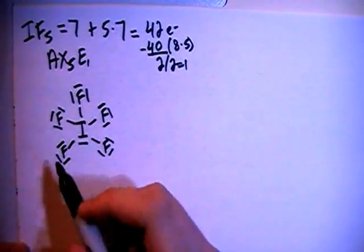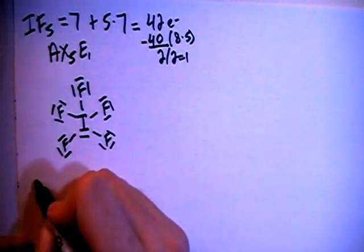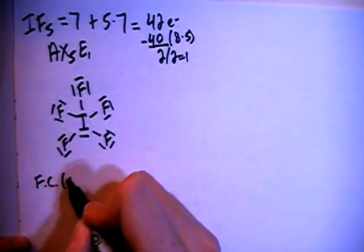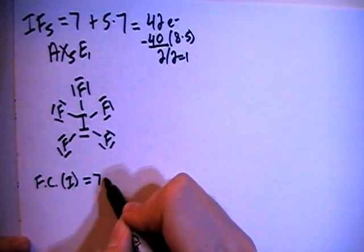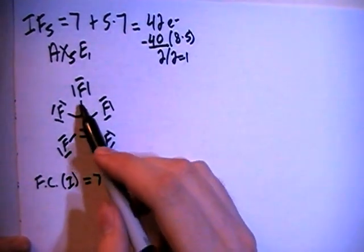So let's go ahead and verify that that is correct by checking the formal charges. So the formal charge on the iodine in the center is going to be the seven valence electrons brought in minus one, two, three.